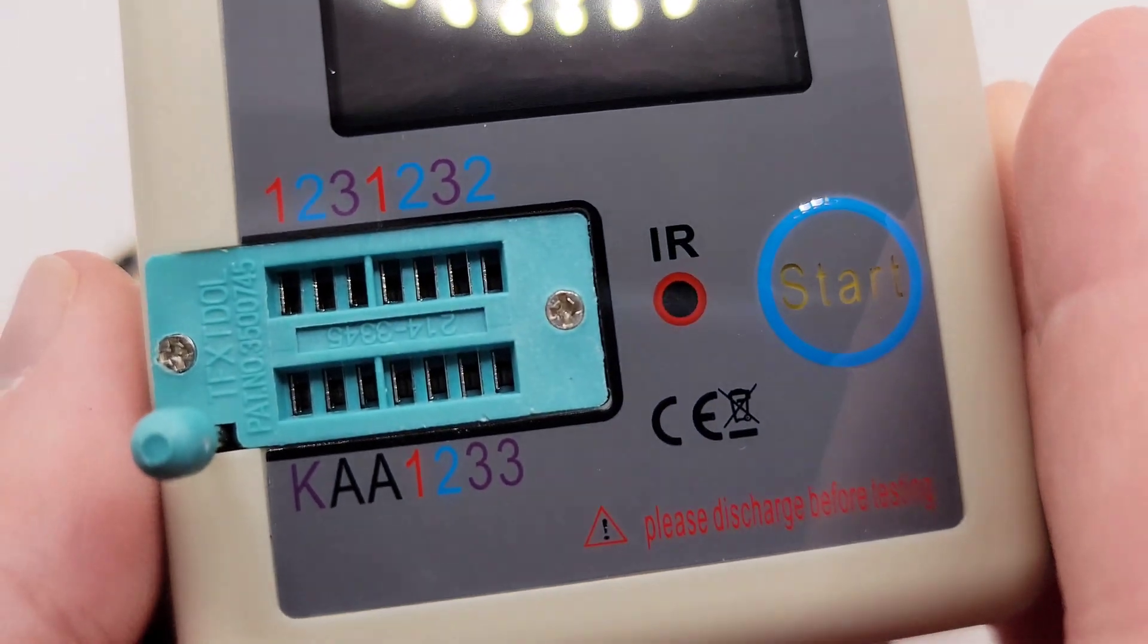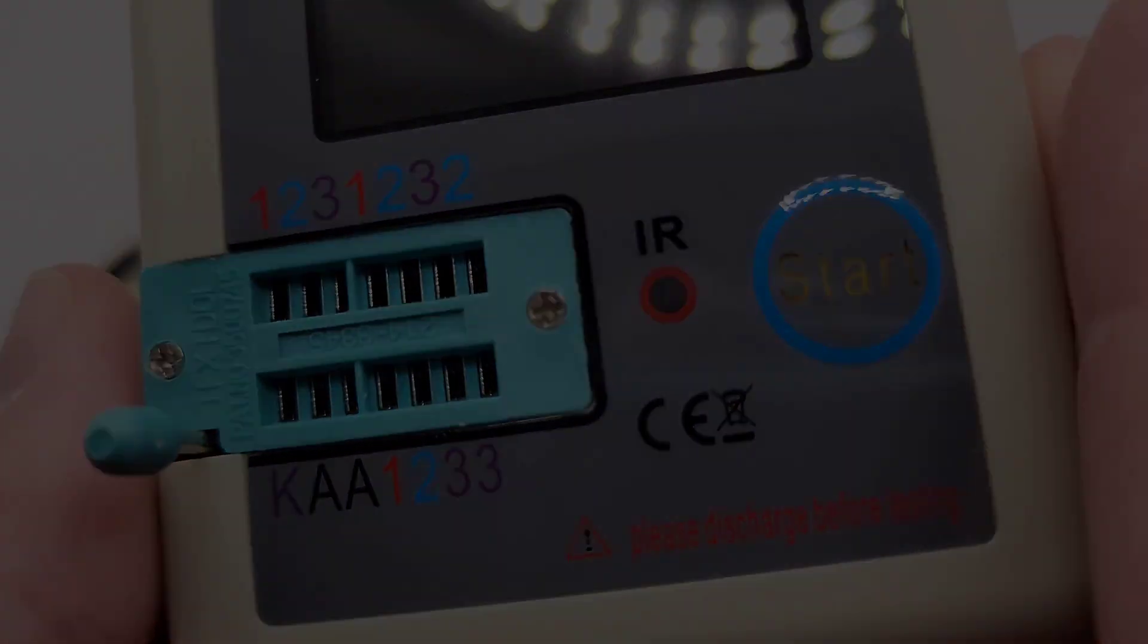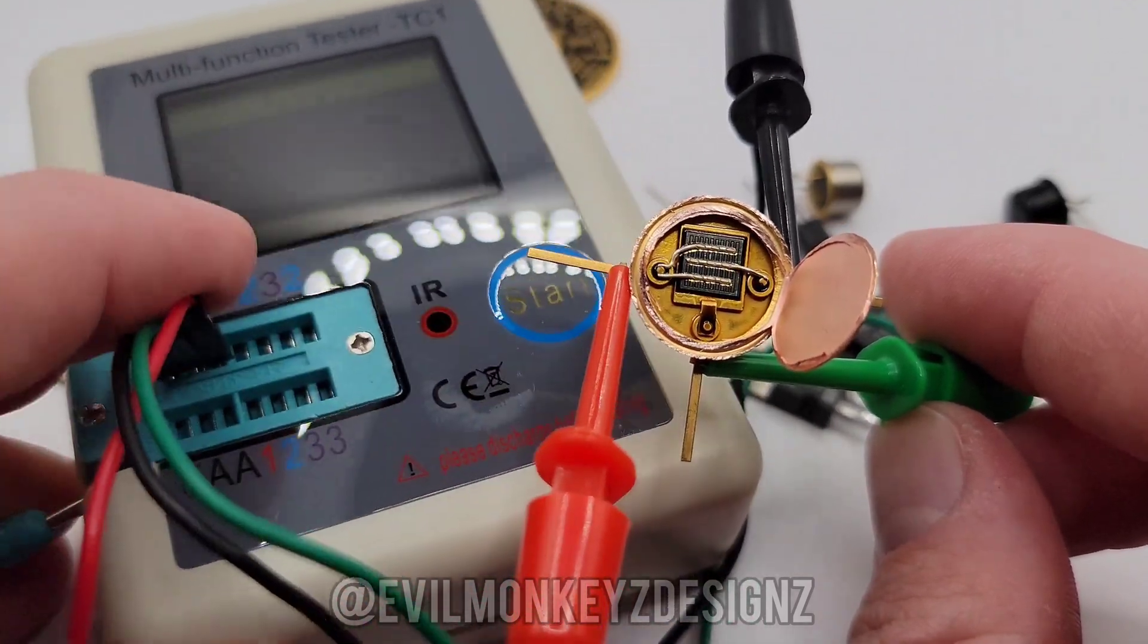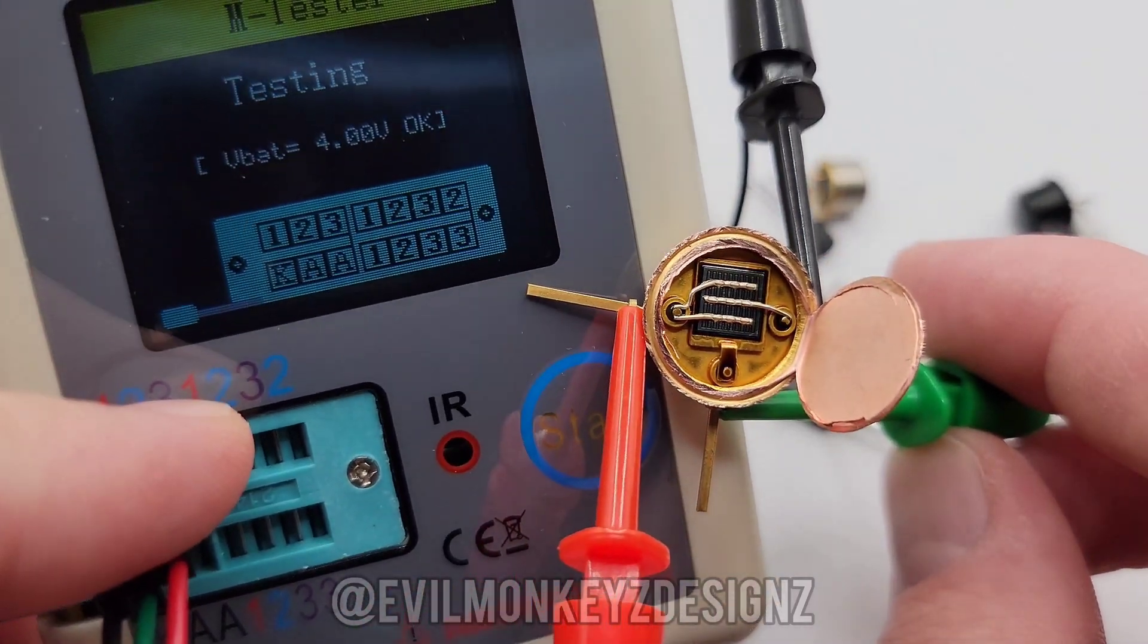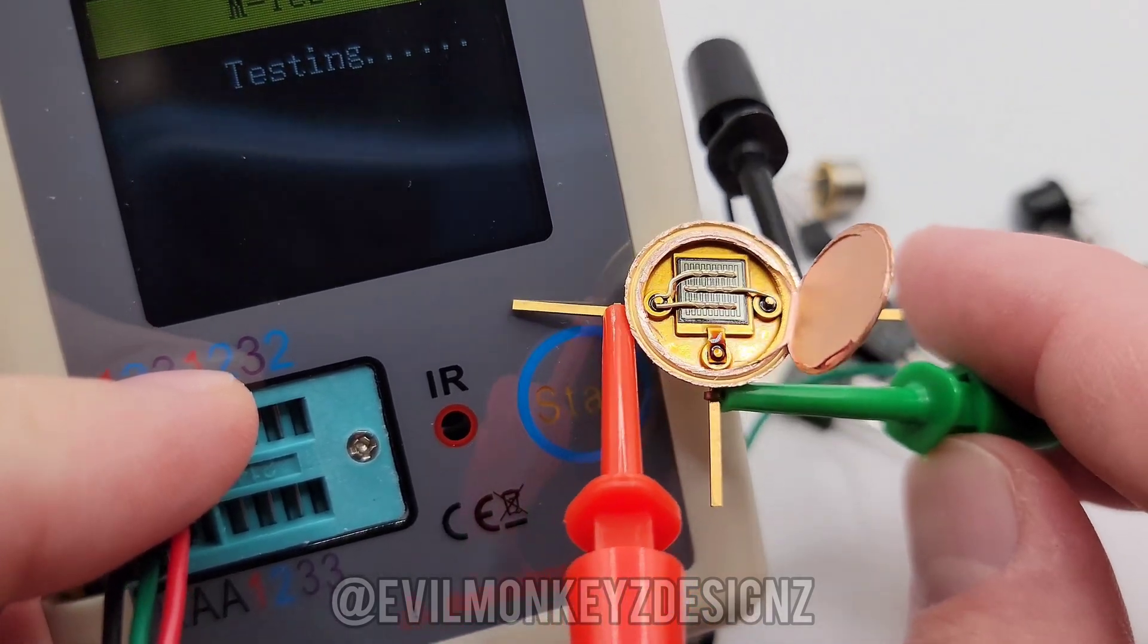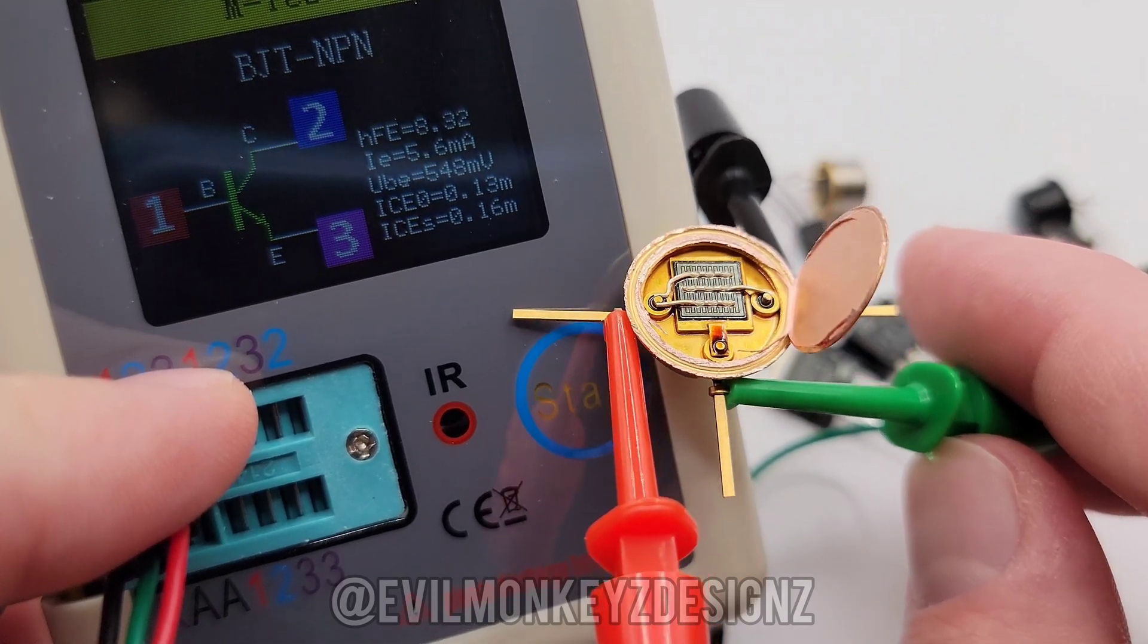This tester came with some probe clip leads, so I'll start with those. I have each terminal for the device connected arbitrarily to the function tester, and let's see what we got. And the answer is an NPN BJT.